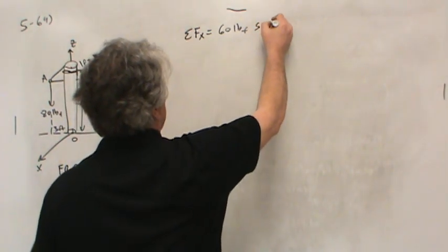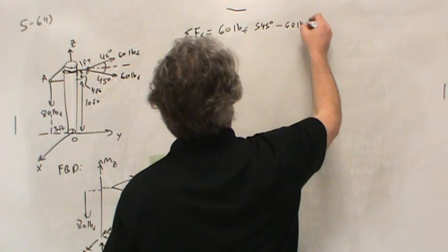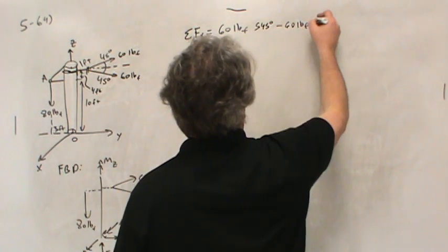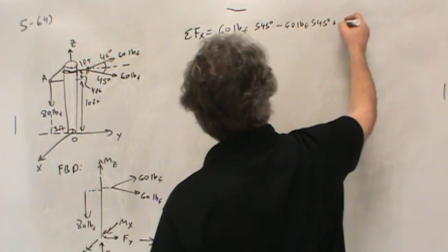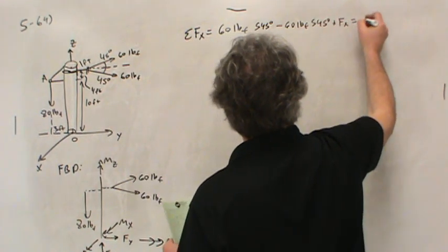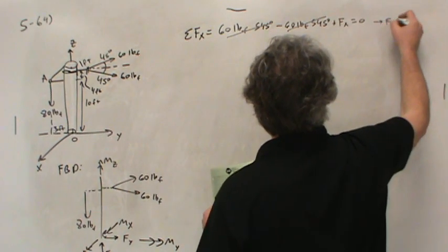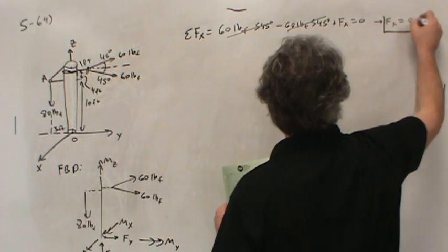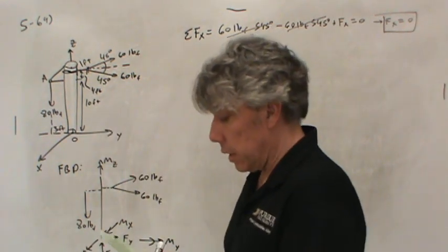minus the 60 pounds pulling back along the negative axis, sine of 45 degrees, plus the force in the X direction equals zero. So you can tell those two are going to cancel, and basically, Fx equals zero. There is no horizontal force in the X direction at the base of that pole. It's not necessary.